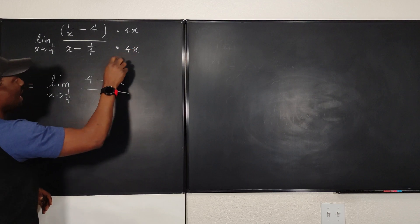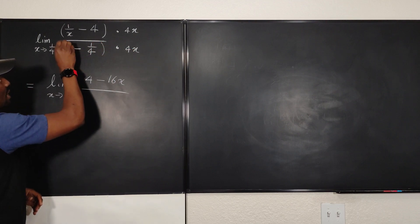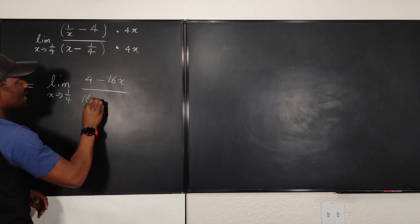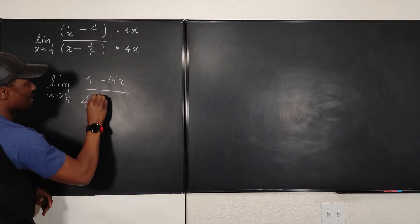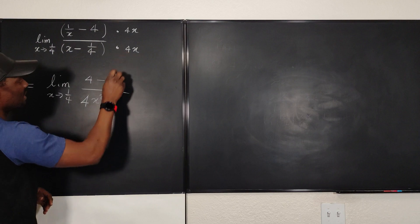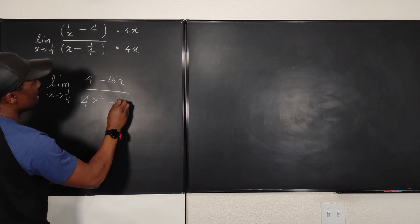And here, what do I have? Do this multiplication, I'm going to get 16X. Sorry, I'm going to get 4X². So this is going to be 4X². And if I multiply this, I got minus X.